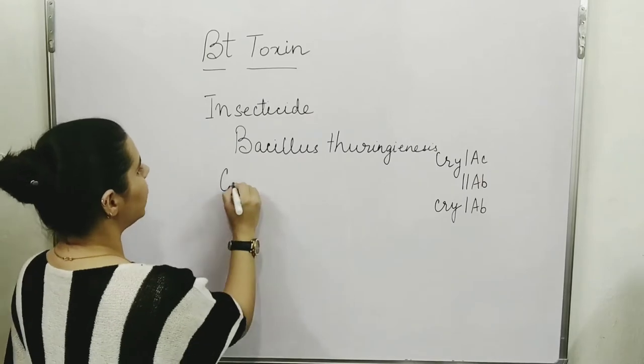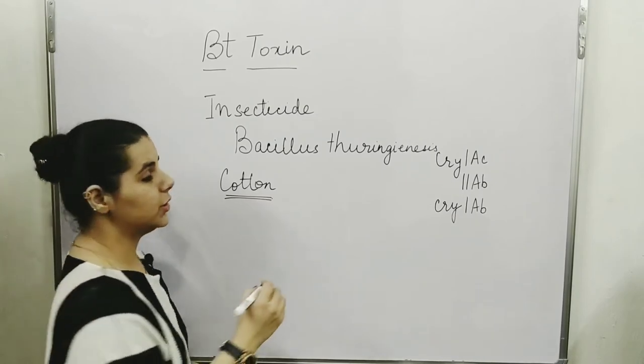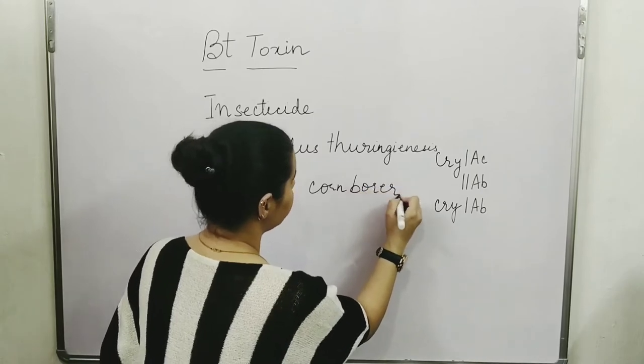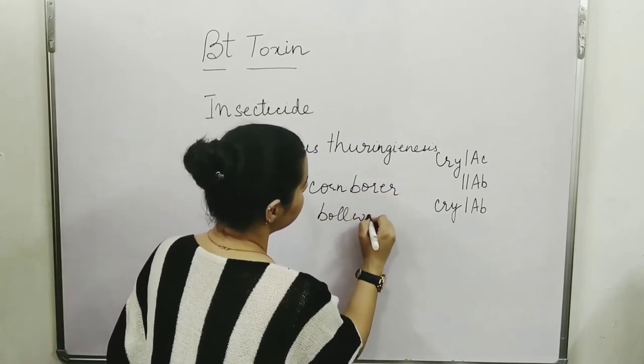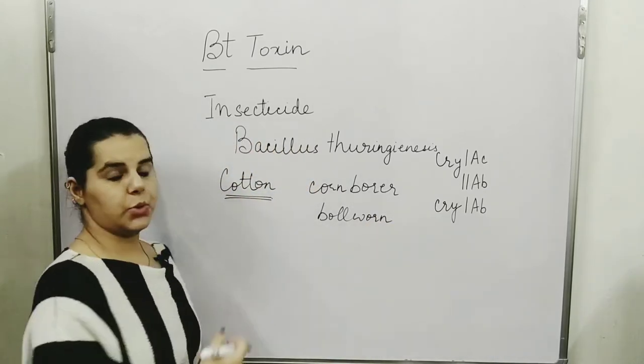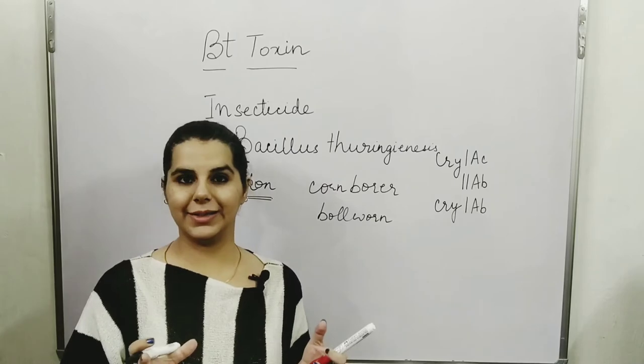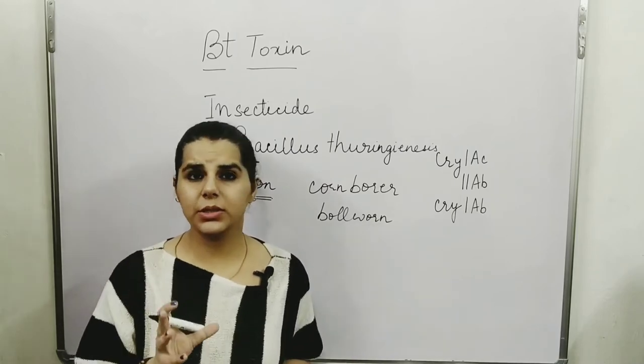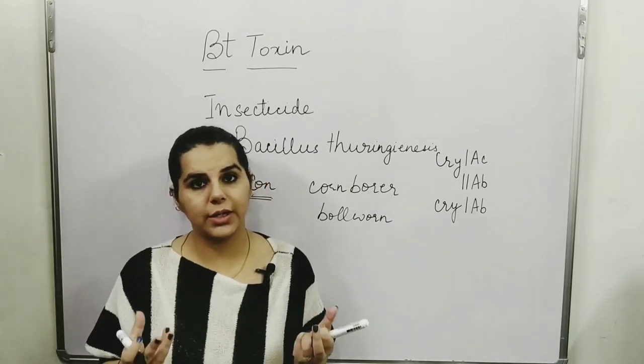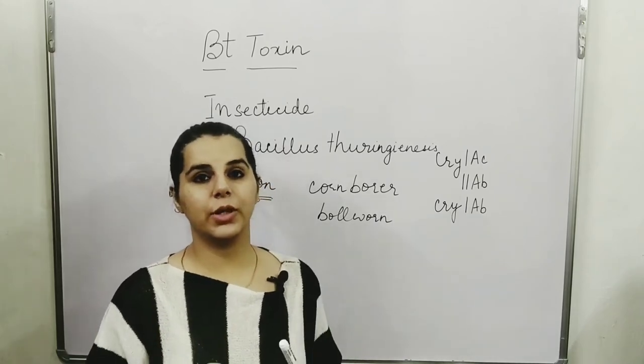The cotton plant is affected by pest insects like corn borer or bollworm, which damage the plant. The boll is destroyed by premature opening, which damages the cotton crop.